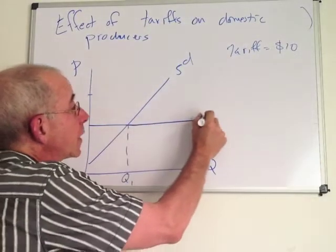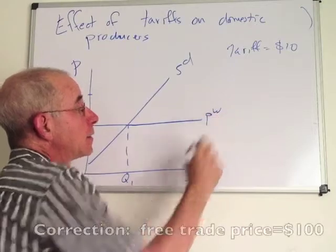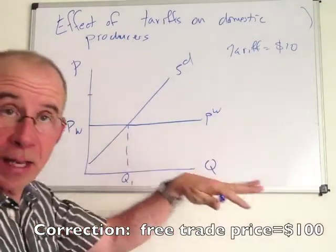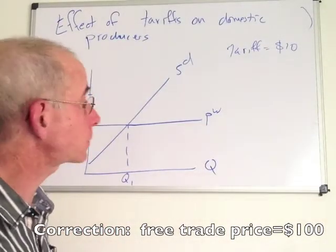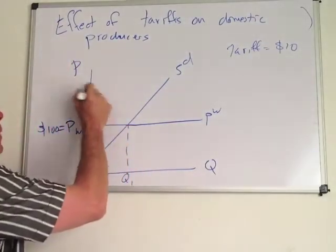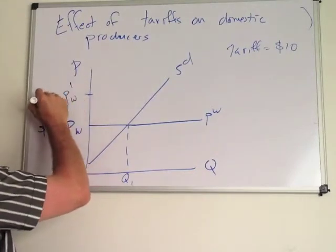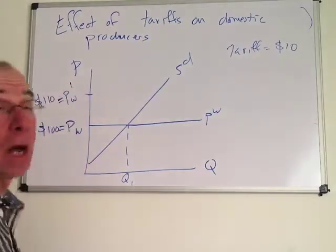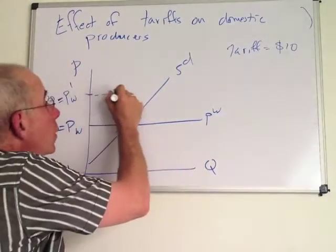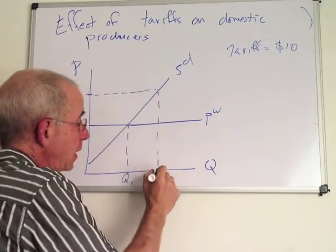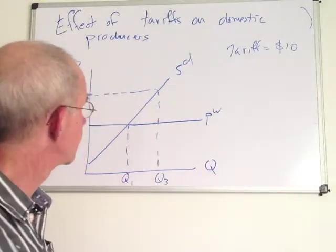It's a small country where the world's supply is such that the world will supply as much of this as you want at a price of $110. If the price goes up to $110 as a consequence of the tariff, there's a tariff of $10, then we're going to see an increase in domestic production, as we saw a few moments ago.